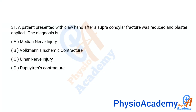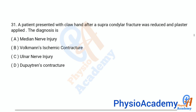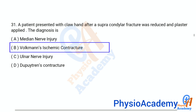Question number 31: A patient presents with claw hand after a supracondylar fracture was reduced and plaster applied. The diagnosis is: option A median nerve injury, option B Volkmann's ischemic contracture, option C ulnar nerve injury, option D Dupuytren's contracture. The correct answer is option B, Volkmann's ischemic contracture.